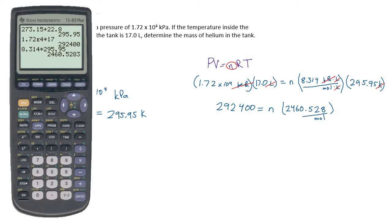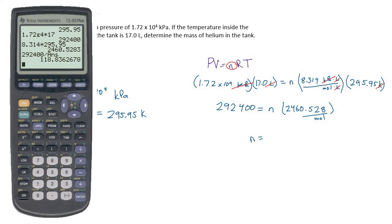My last step mathematically for solving for n is going to be to divide both sides by this 2460 number. When I do that, then as a number I'm going to get 118.836.